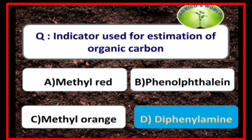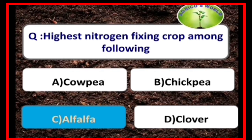Diphenylamine is the indicator used for the estimation of organic carbon. Alfalfa is the highest nitrogen-fixing crop among legumes.